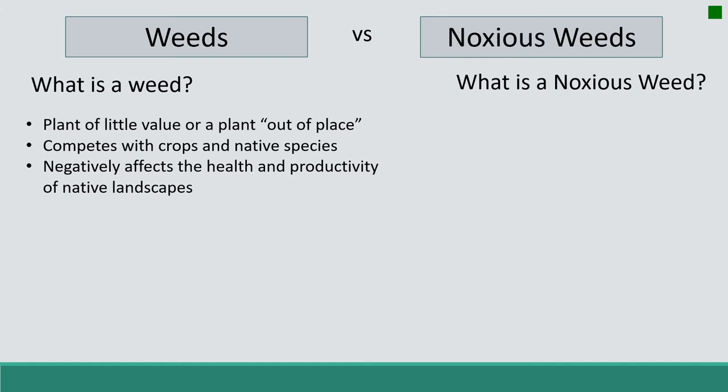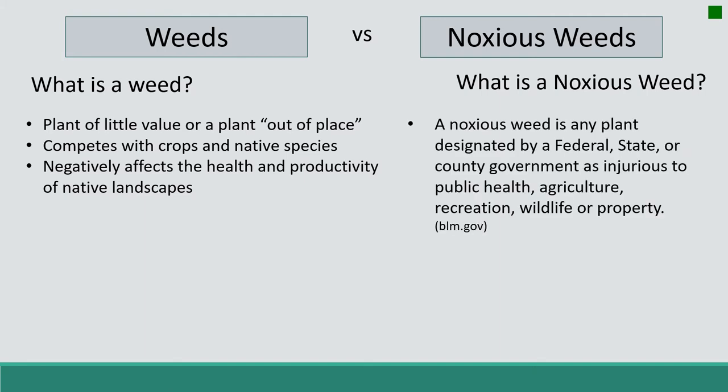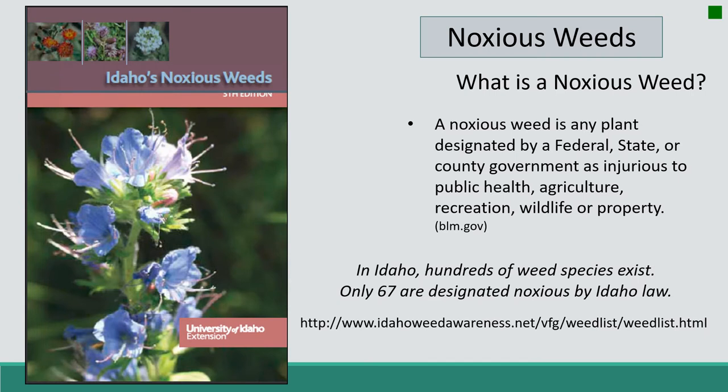What is a noxious weed? The real difference between weeds and noxious weeds is that noxious weeds are designated by law. They typically involve economic damage and are a threat to human interests. Noxious weeds do not encompass all invasive plant species or other weeds. For example, in Idaho there are hundreds of weed species, however there are only 67 that are designated noxious by Idaho law.